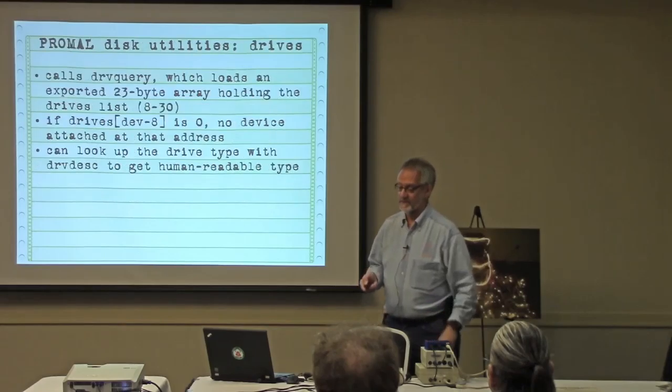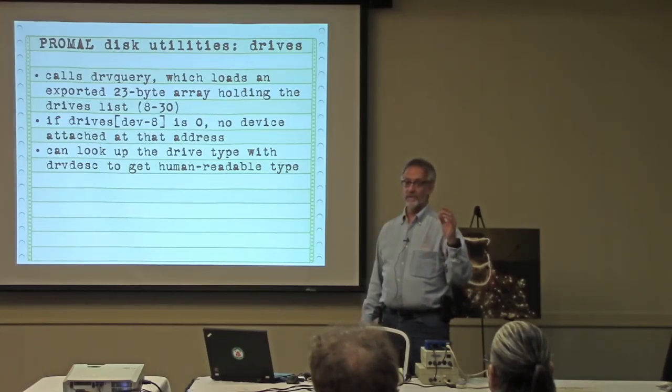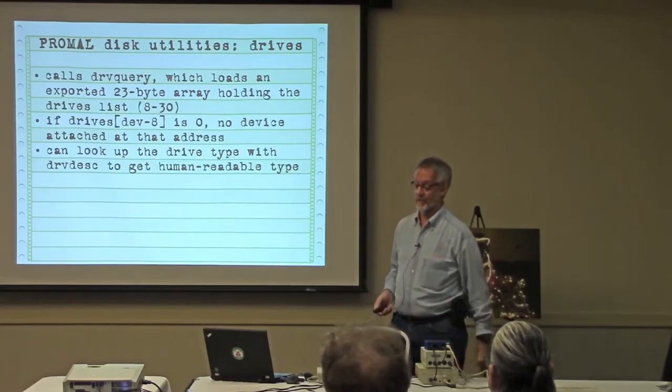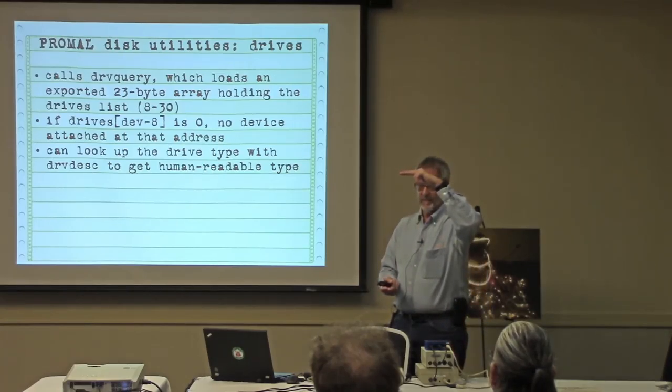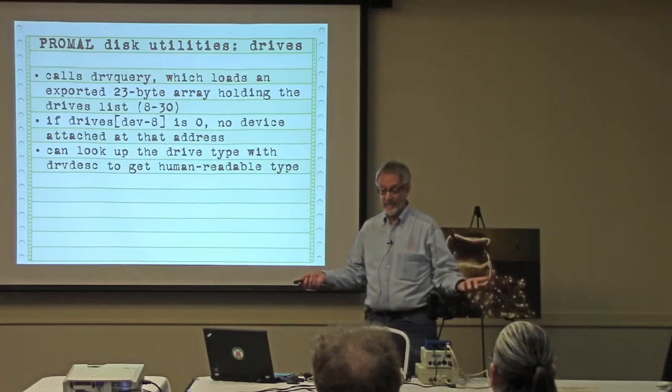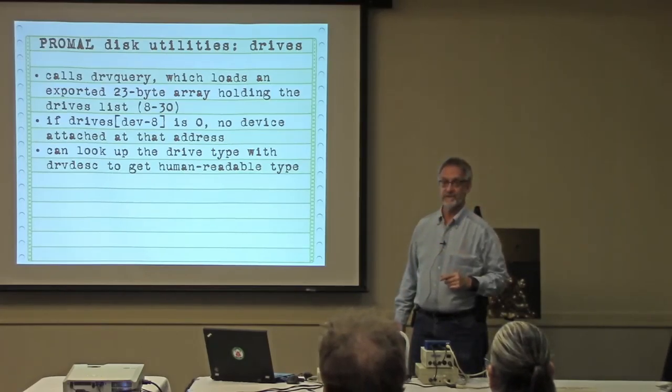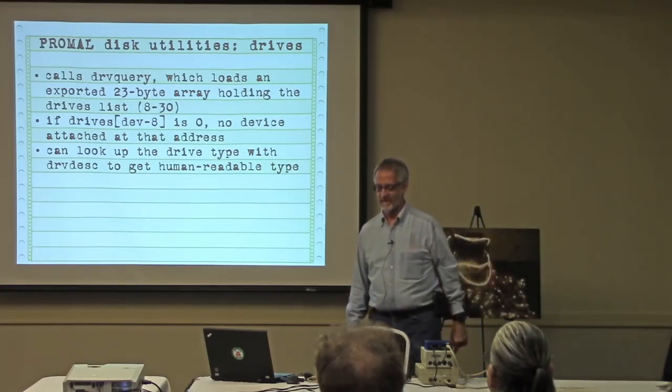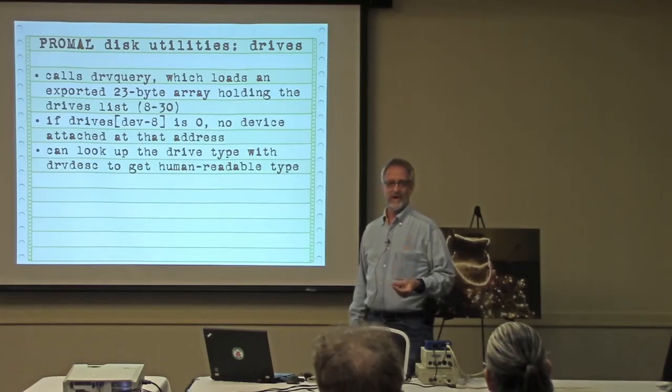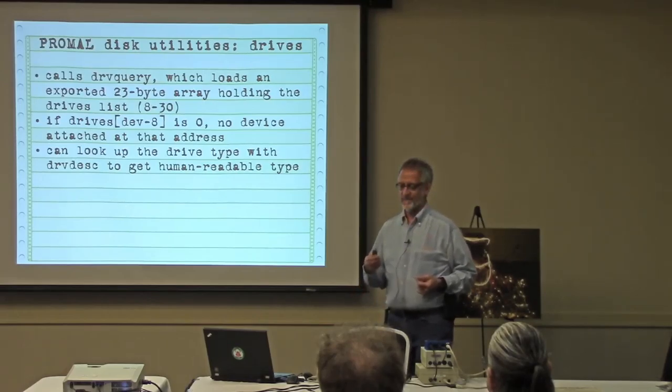The first of the utilities is drives. This uses that drive query routine. All these programs have a stub loader and a main program. The main program is actually smaller than the stub loader. It calls drive query, which fills a table. The table is declared export, which means the calling programs can inspect the values. So it's a simple matter to iterate through that table and every time you get a non-zero value, look it up with drive description.